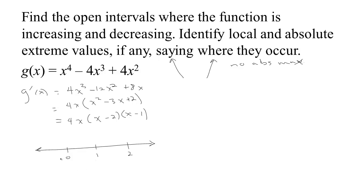At each critical point the derivative is zero. Critical points are where the derivative is zero or undefined — in this case there are three: 0, 1, and 2. To the left of 0, x is negative, giving three negatives multiplied together, so f prime is less than zero there.